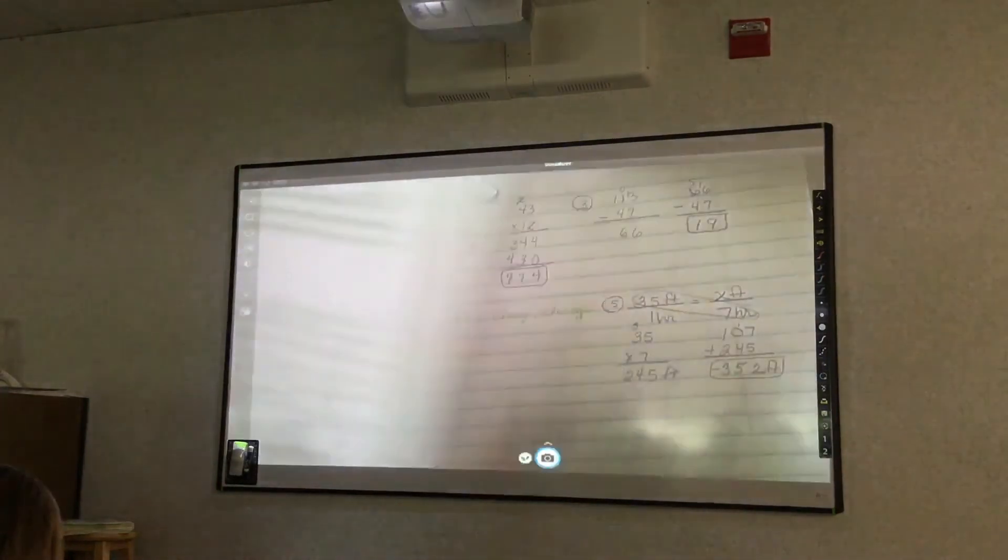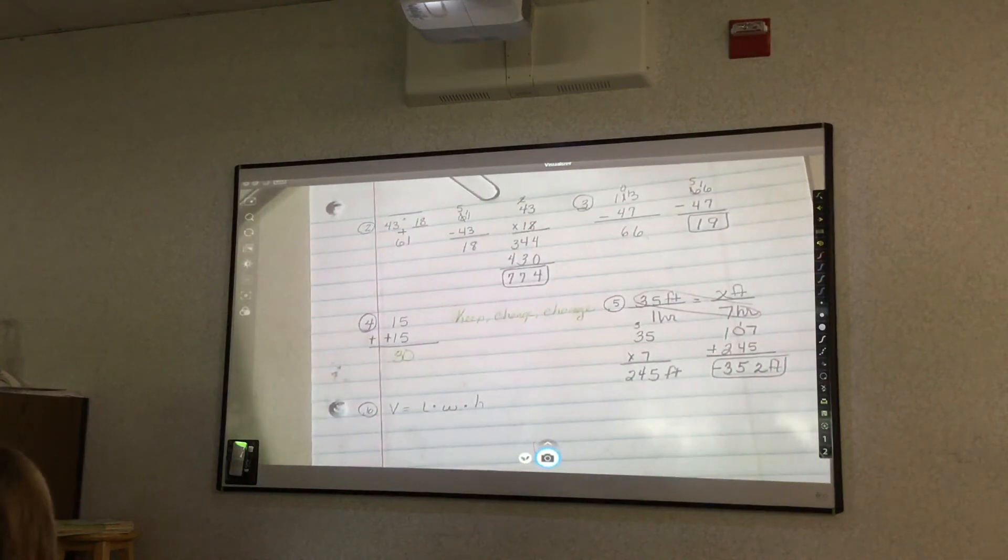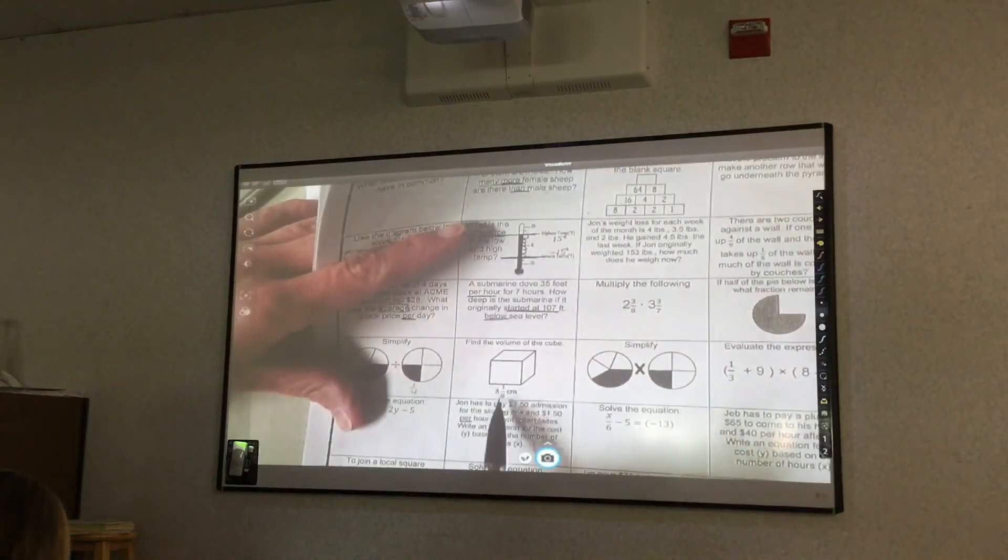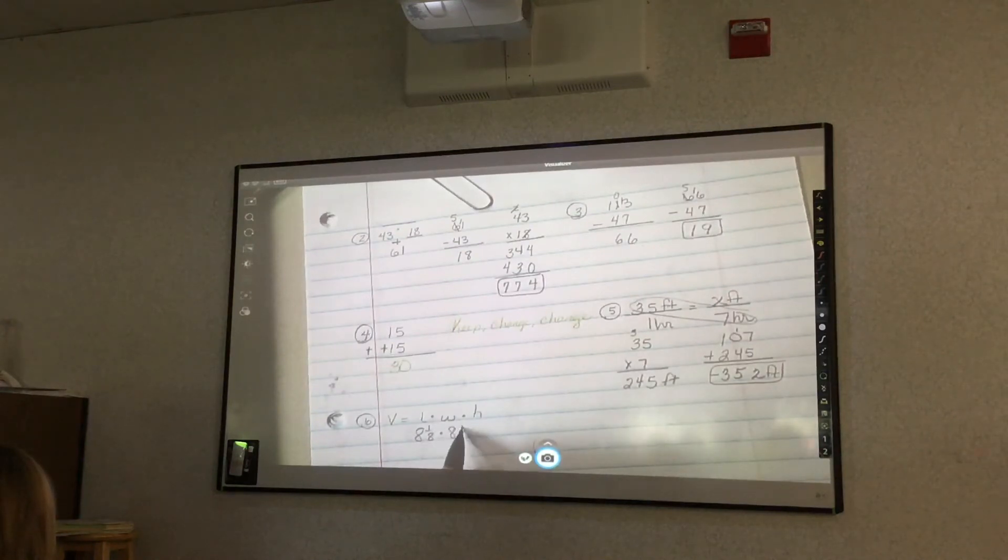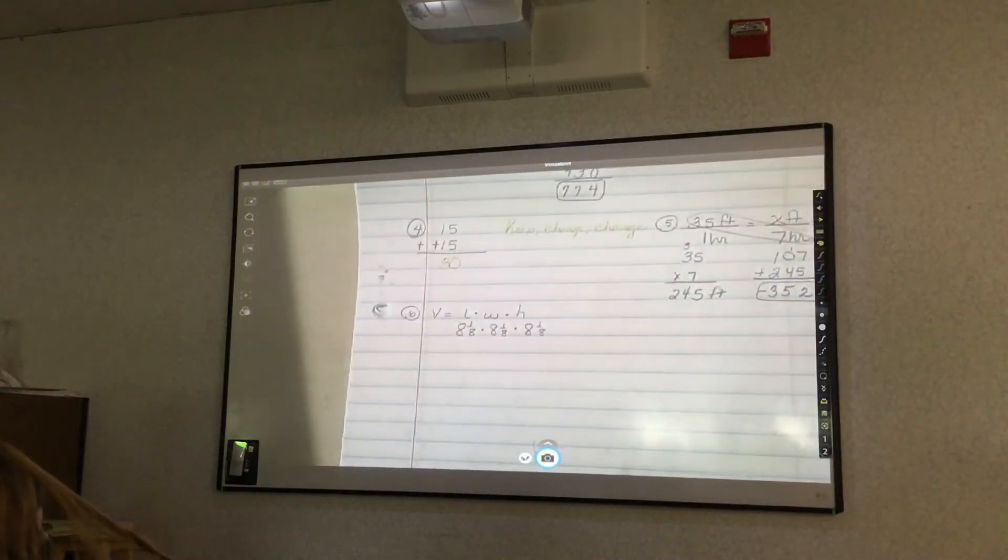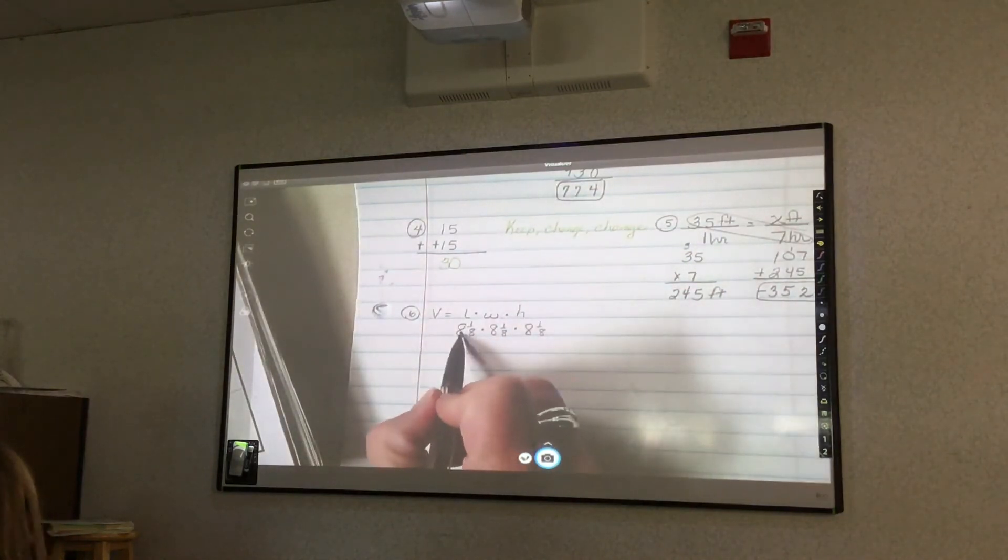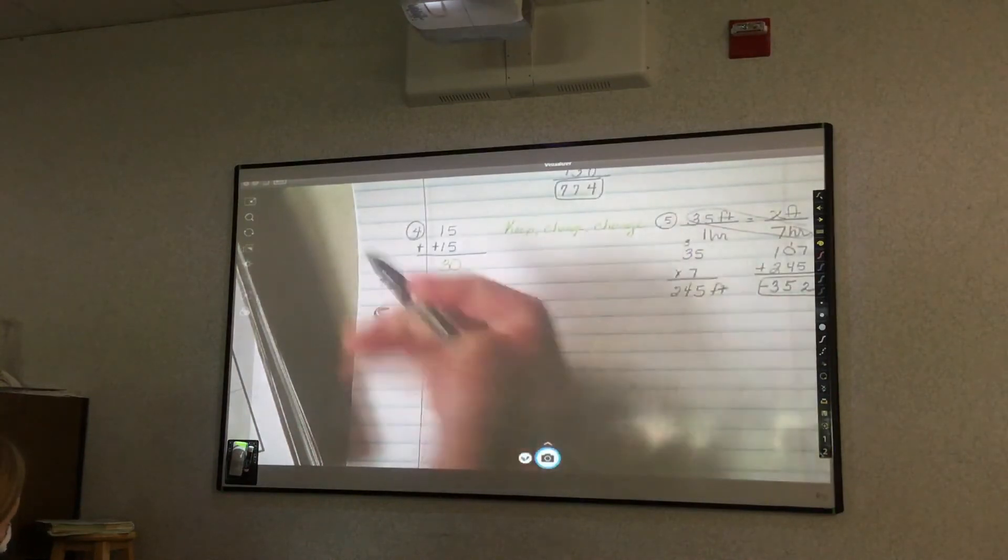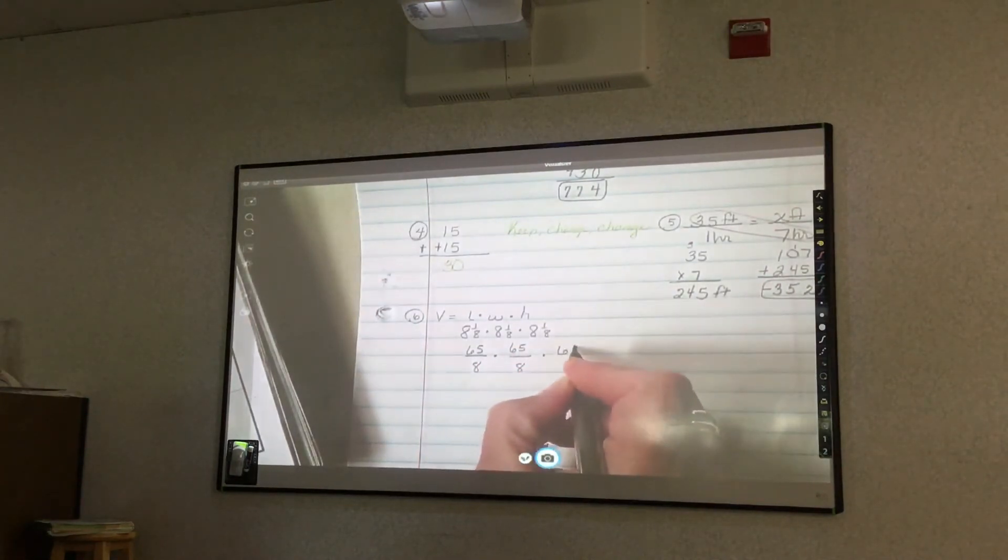Find the volume of the cube. How do you find volume? Length times width times height. And the length of the cube, if it's a cube, all the sides - the length and the width and the height, they're all the same, correct? So I would need to do 8 and 1/8 times 8 and 1/8 times 8 and 1/8. We know when we're multiplying mixed numbers, we have to change the mixed number to an improper fraction. So 8 times 8 is 64. 64 plus 1 makes 65 over 8. So it's 65 over 8. I'm going to make this into two lines. So I have 65 over 8 times 65 over 8 times 65 over 8.